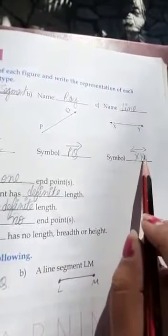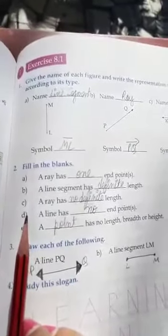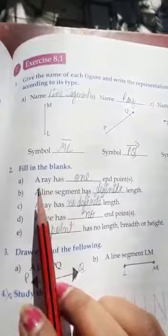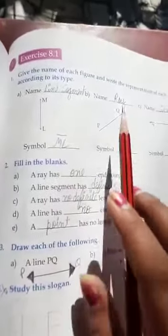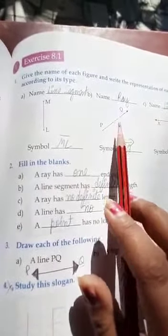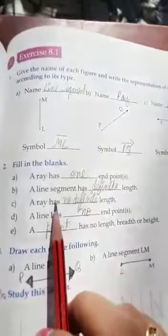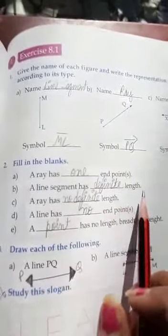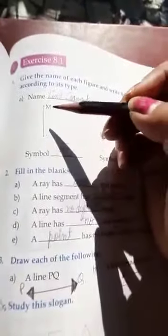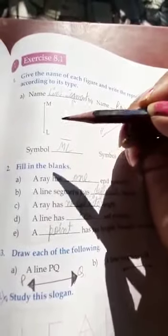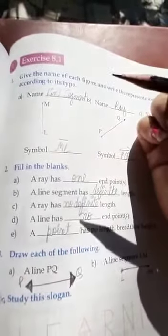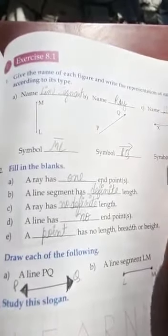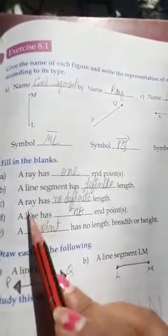Second question is: now fill in the blanks. First part: a ray has one end point, as we've seen here. A ray has only one end point. Line segment has definite length. If we are marking with two end points any line, it becomes a line segment and it will have a definite length. It can be four centimeter, five centimeter, but it will be countable.